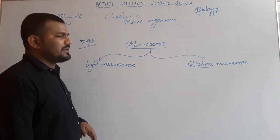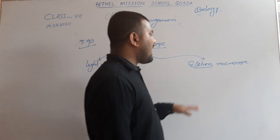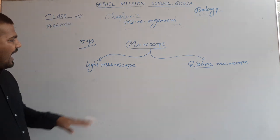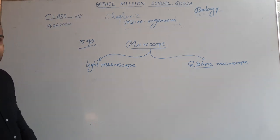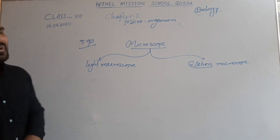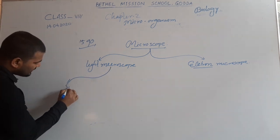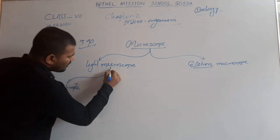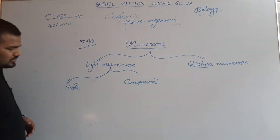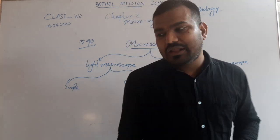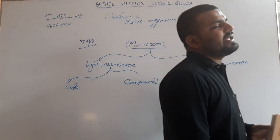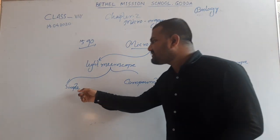We can observe the specimen by creating photography using the electron microscope. It was invented by M. Knoll and E. Ruska. The light microscope, on the basis of the number of lenses, is of two types. It may be simple or compound. The simple light microscope has only one lens and the viewing media is light.